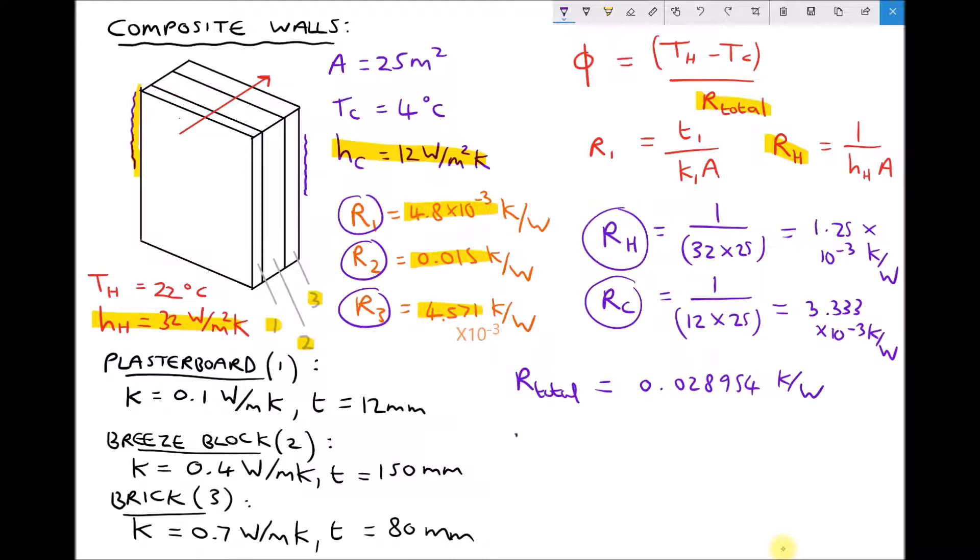So finally we can calculate our rate of heat transfer, taking into consideration our surface heat transfer coefficients. We get T hot, 22, minus T cold, 4, divided by our total thermal resistance, 0.028954. Giving us a rate of heat transfer equal to 621.7 watts.